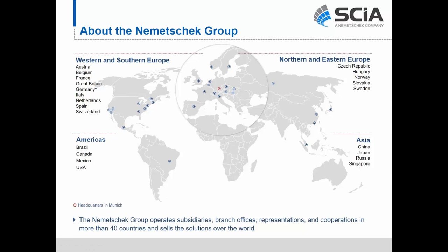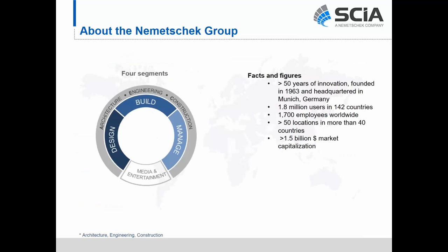A little bit about the company for those that may not know Nemetschek as a brand. Nemetschek is one of the largest AEC software developers outside of the United States, specifically in the EMEA region. We have offices all over the world, focusing mainly on four key segments: architecture, engineering, and construction, all used within the building design and management of projects market. We have about 1.8 million users in 142 countries, 1,700 employees worldwide, and more than 50 locations in more than 40 countries.